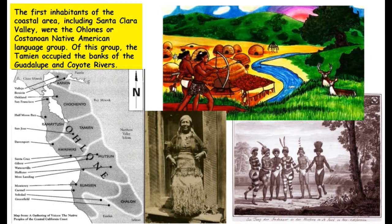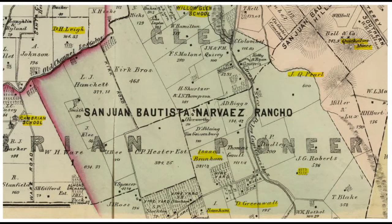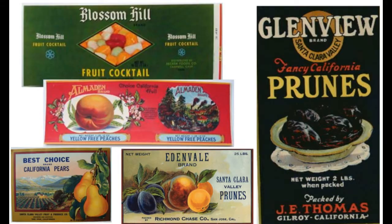You probably don't always think about where street names come from, where school names come from, but they all come from somewhere. I want you to think about what was here before we were all here — before downtown, shopping centers, houses, and condos. There were parcels of land divided up, mostly farms and orchards. Santa Clara County actually provided 25% of the world's trade in produce. That's a lot for our little area.